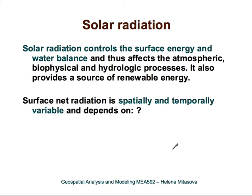In the second section of this lecture we will talk about solar radiation. Solar radiation is an important and highly dynamic parameter. It controls the surface energy and water balance, and it affects the atmospheric, biophysical and hydrologic processes. So it is very important for ecosystems, for agriculture, in architecture and in many other areas. It also provides a source of renewable energy.